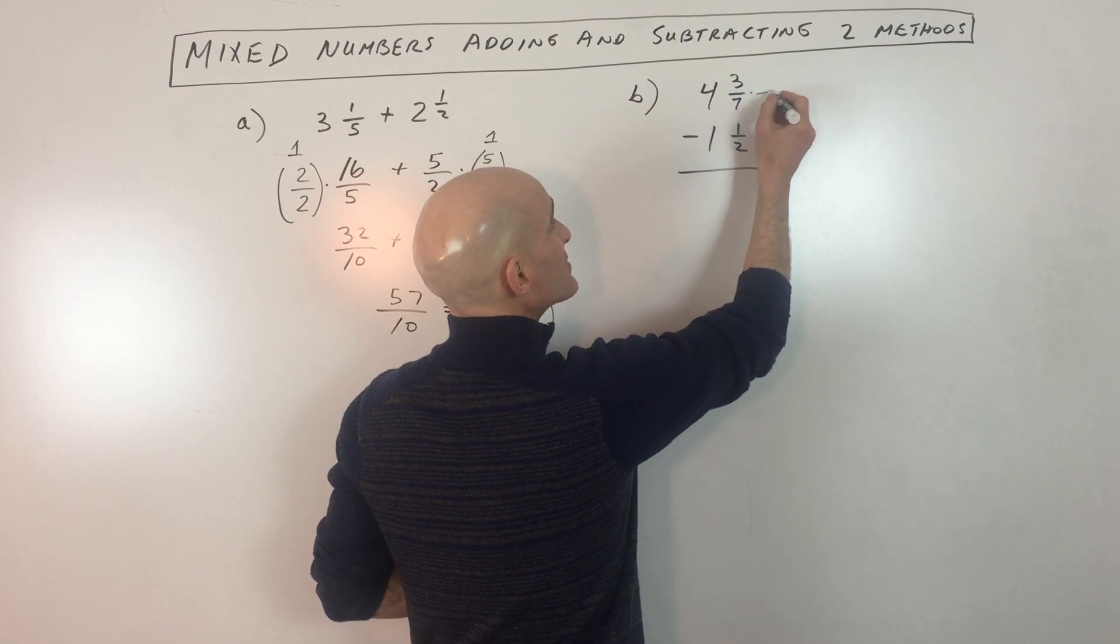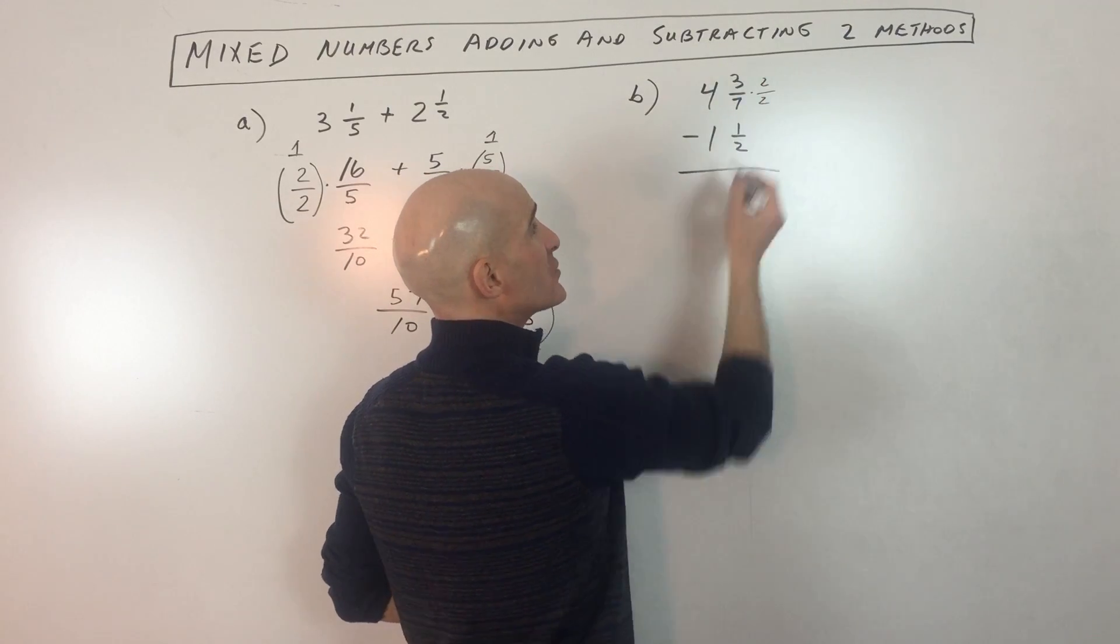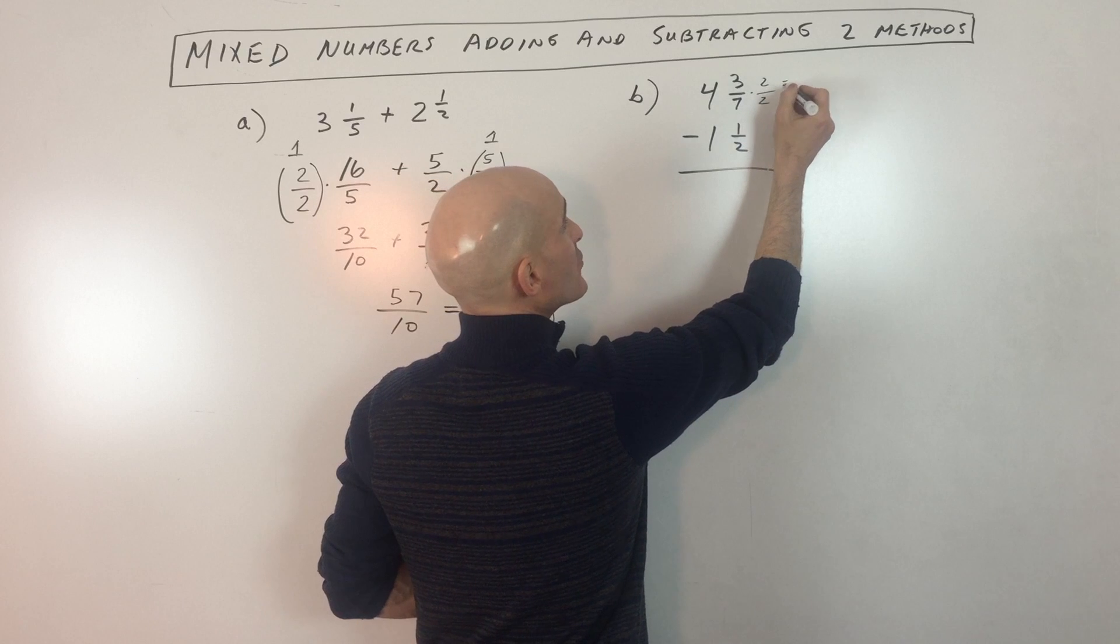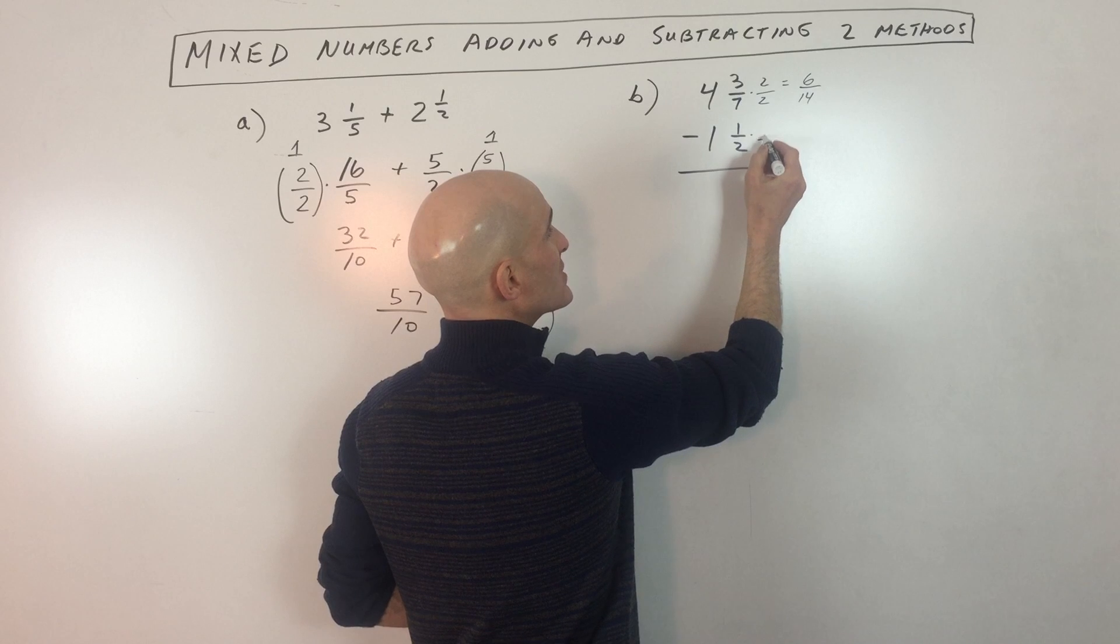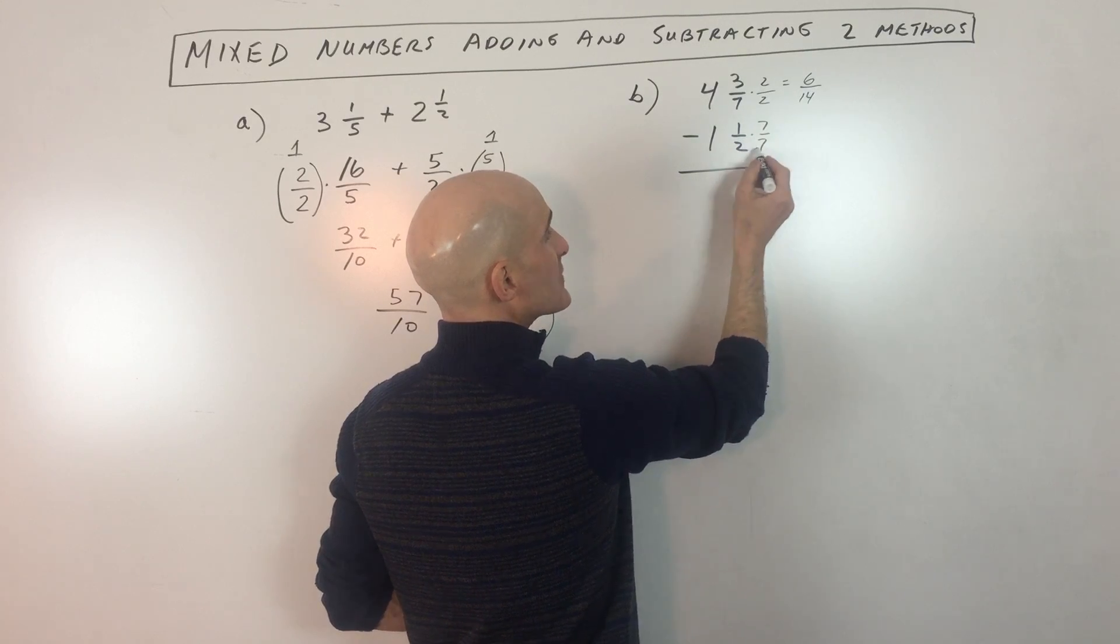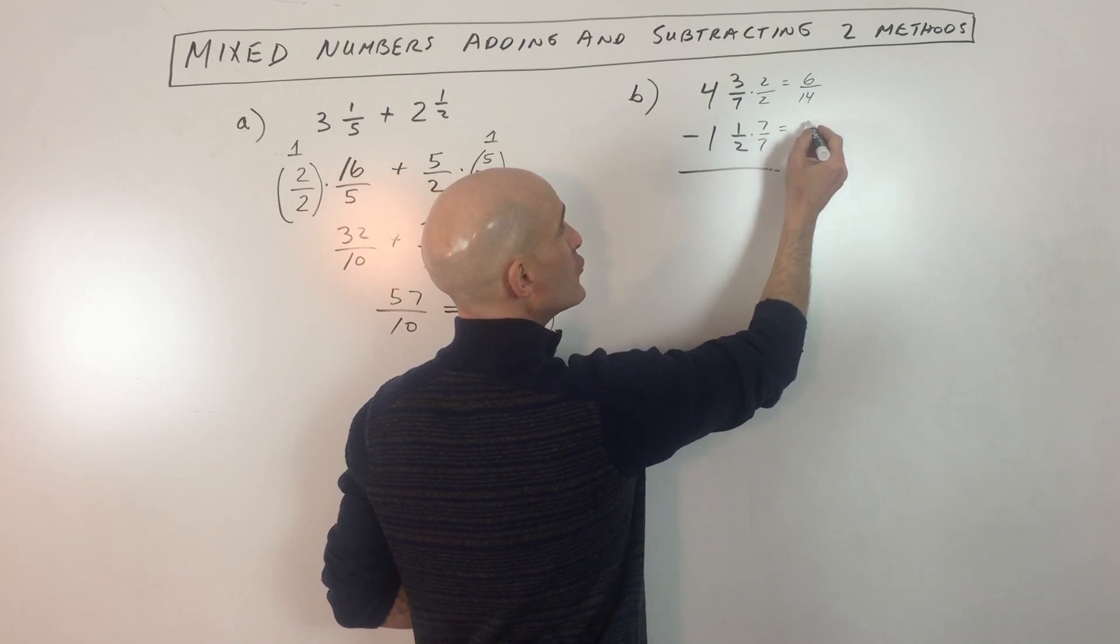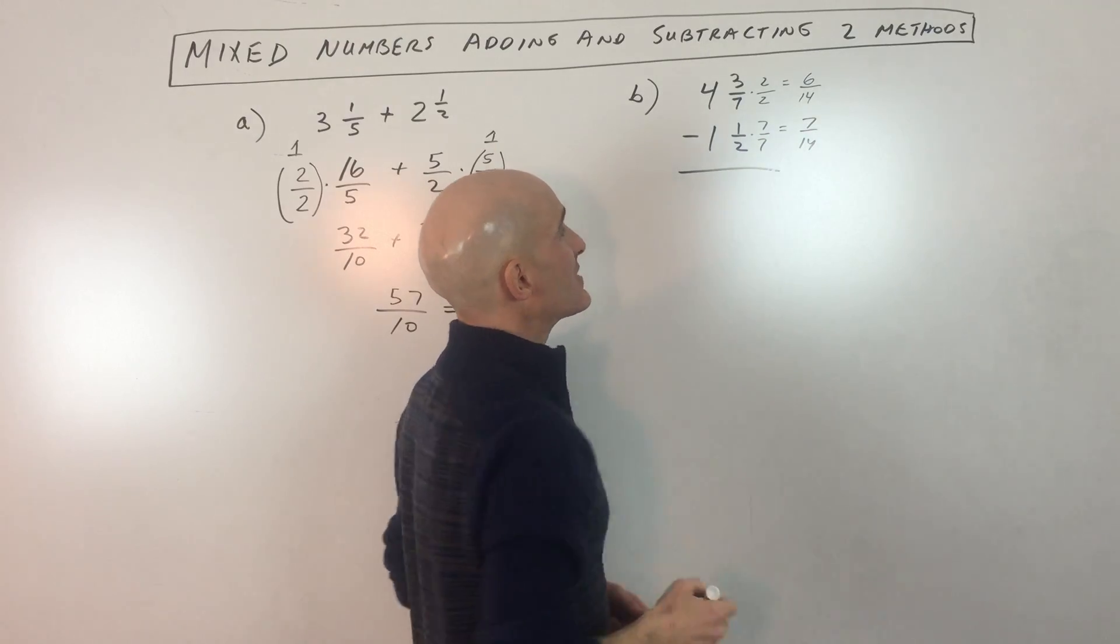So what I'm going to do is I'm going to multiply this denominator by two and the numerator by two because remember that's one. So this is going to give us six fourteenths. Over here, we want this denominator to be 14. So we're going to multiply the bottom by seven. So that's 14. But we also have to multiply the numerator by seven. So that's seven fourteenths.